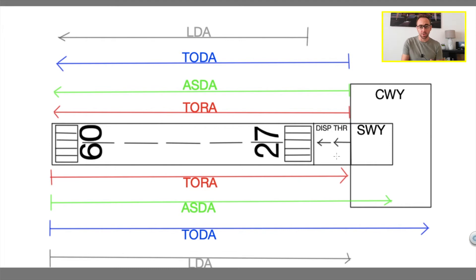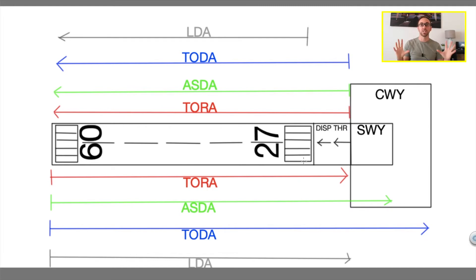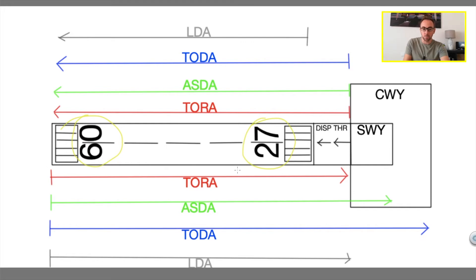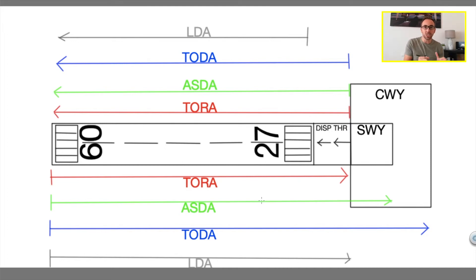Now that we know what these three are, I want to make sure we understand that every runway has got two directions for takeoff and landing — so every airport has kind of two runways. If you look on the whiteboard, you've got runway 09 and runway 27. We need to understand the declared distances — TORA, TODA, ASDA and LDA — for each runway direction, because we could have clearways, stopways and displaced thresholds, but we could also not have them.